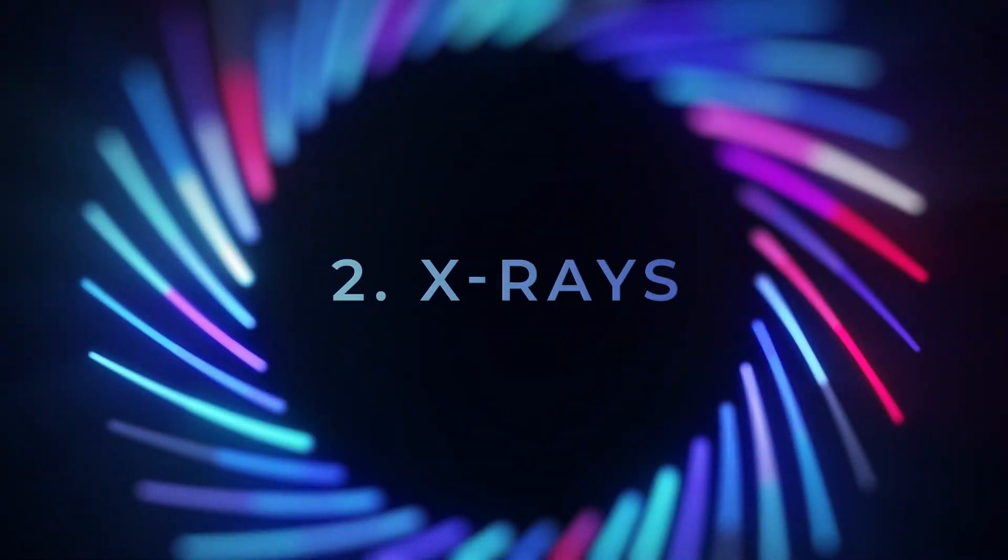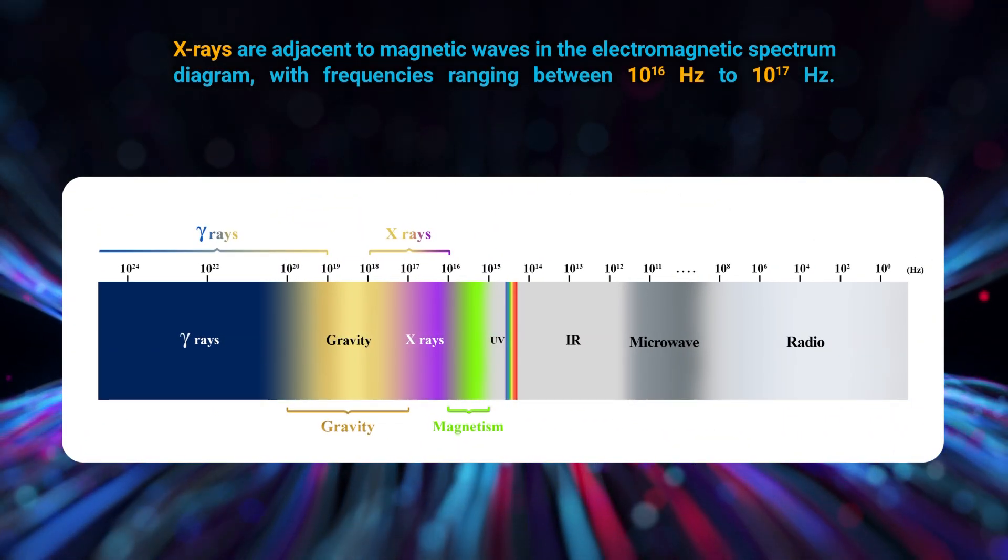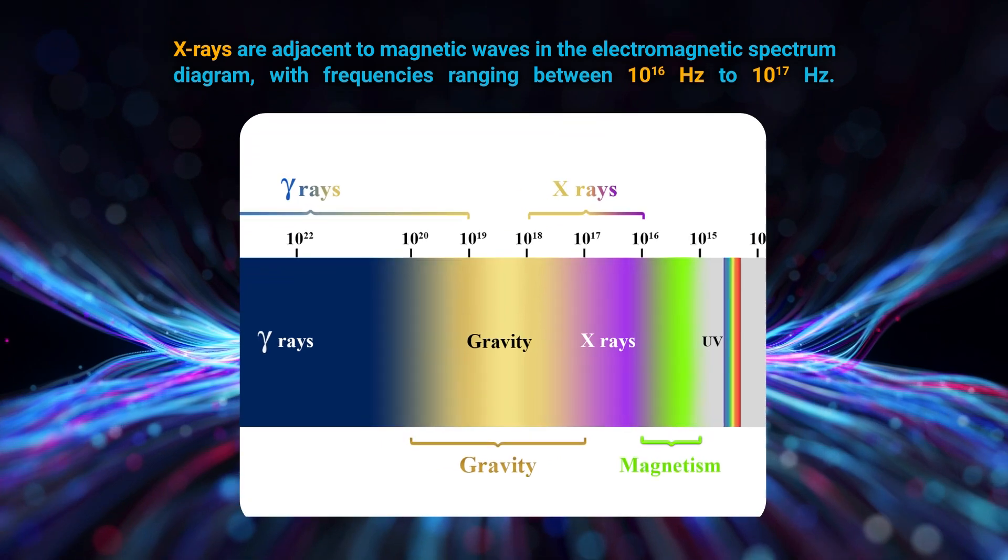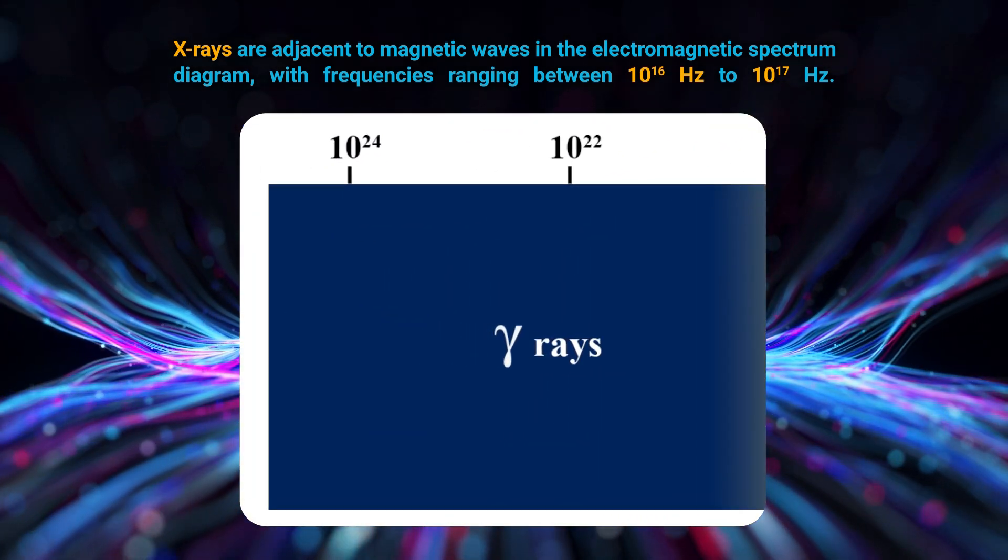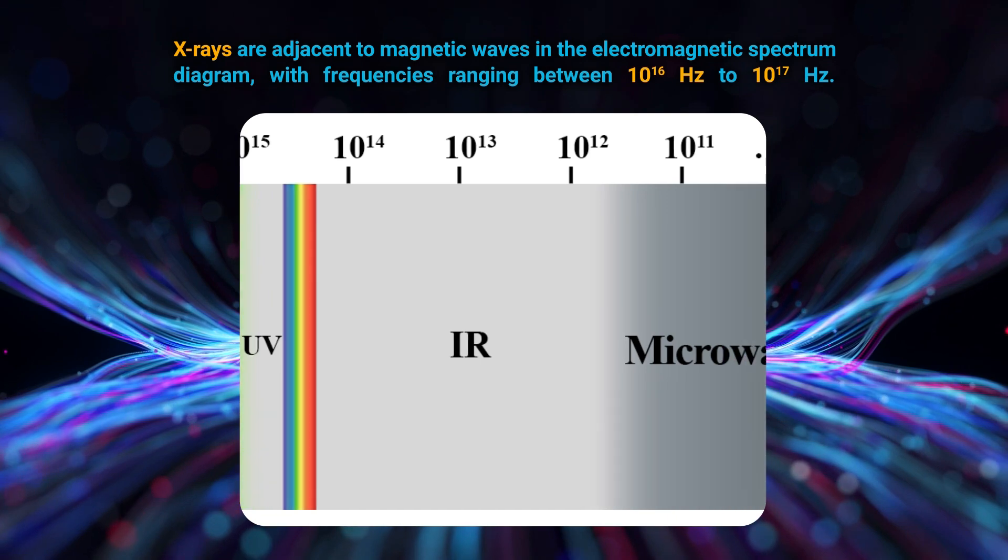X-rays are adjacent to magnetic waves in the electromagnetic spectrum diagram with frequencies ranging between 10 to the power of 16 Hz to 10 to the power of 17 Hz.